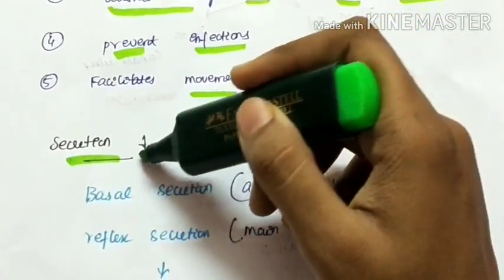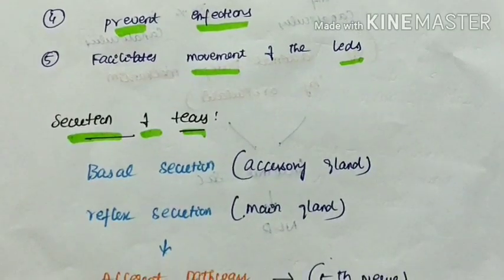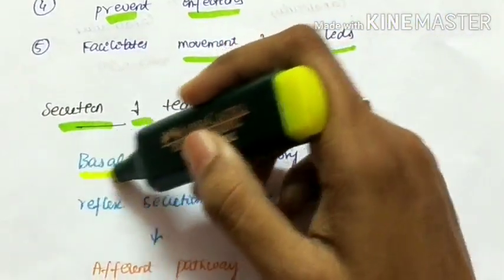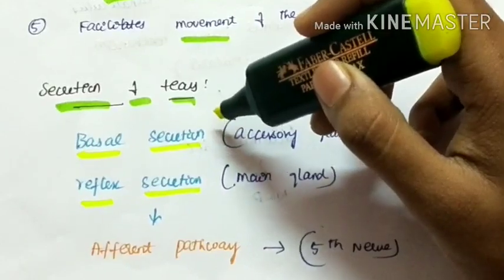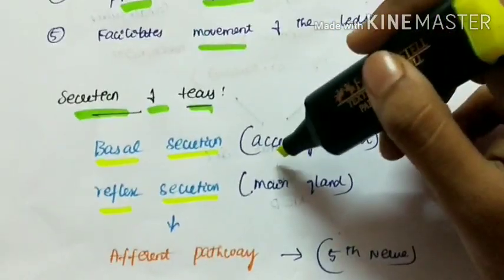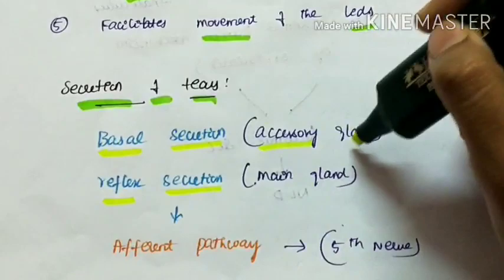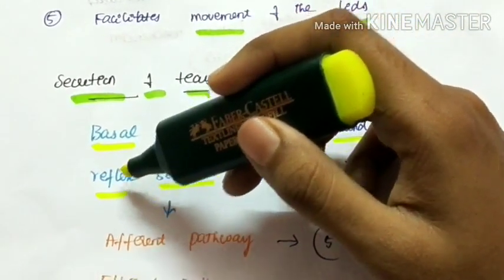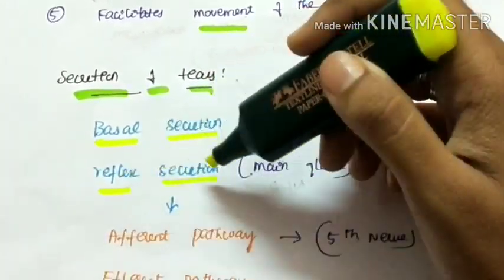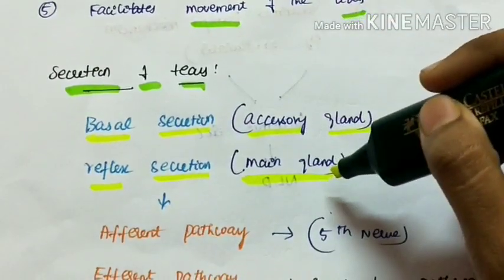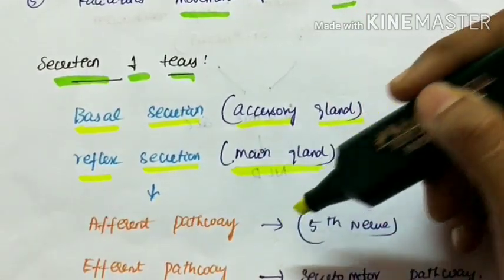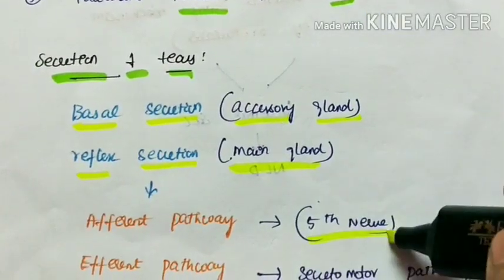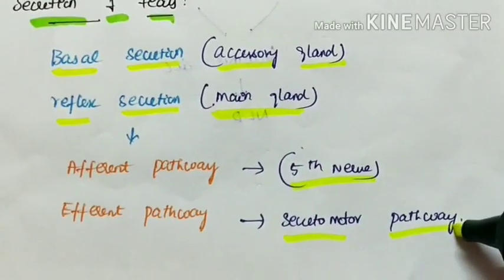There are two types of tear secretion: basal secretion and reflex secretion. Basal secretion occurs throughout the day irrespective of any stimulus and is done by the accessory glands. Reflex secretion is by the main lacrimal glands and has an afferent pathway via the fifth nerve and an efferent pathway via the secretomotor pathway.